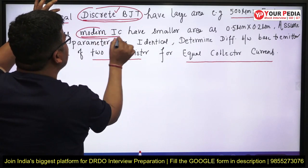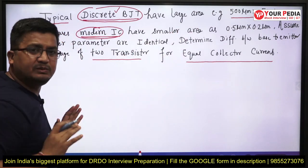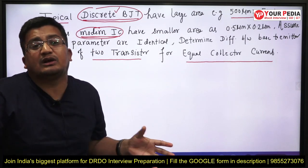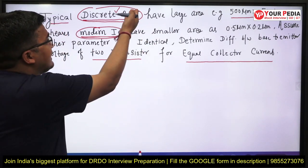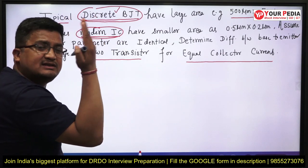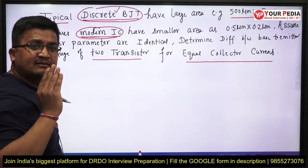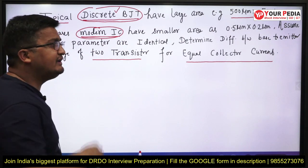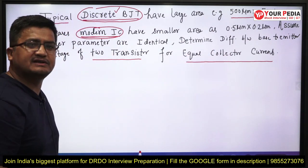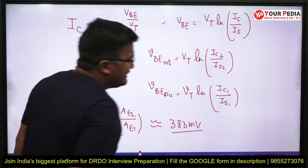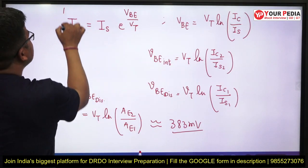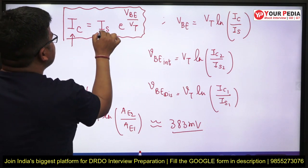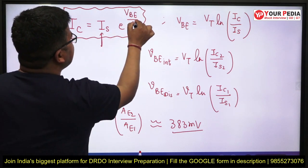If you understand that this is one transistor and the other is a second transistor, forget everything else — it becomes a simple question. So: we have two transistors, area one and area two are given, collector current is identical, and all other parameters are identical. We need to find the difference in base-to-emitter voltage. The transistor collector current equation is just like the diode equation: IC = IS · exp(VBE / VT), where IS is the scaling or saturation current.